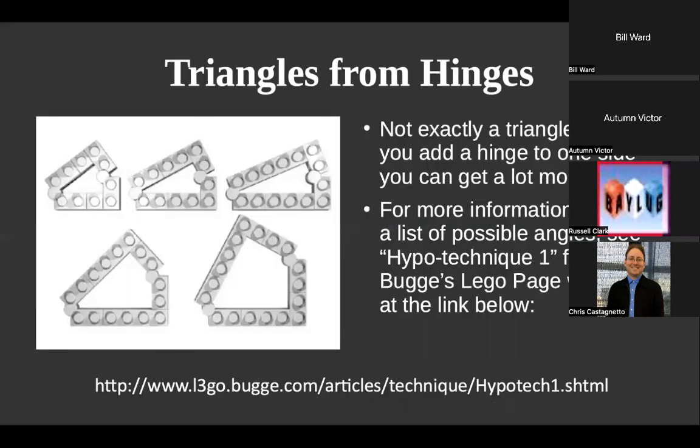Another way to make triangles — or not exactly triangles — is the hypo technique. If you look at the website l3go.booga.com, it has a lot of really useful building techniques. Basically, if you use a hinge you can get a bunch of different angles. They're not exactly triangles but will often serve the same function, so it's worth considering.